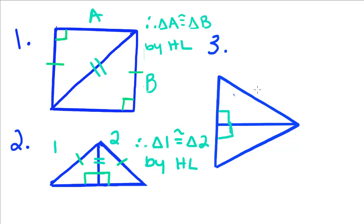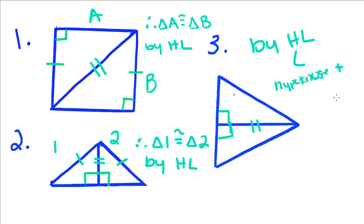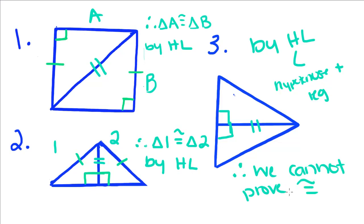For this last example, we have these two triangles. We know they're right triangles and they share this leg. But to prove congruence by HL, we need a hypotenuse and a congruent leg. We don't know that these hypotenuses are congruent, so therefore we cannot prove the triangles congruent — we don't have enough information.